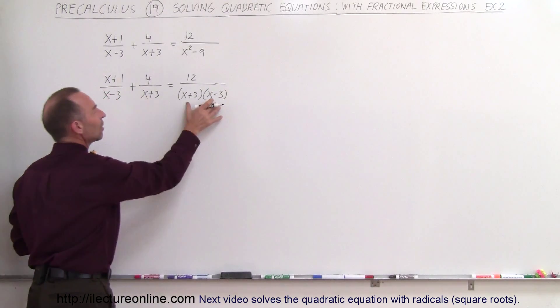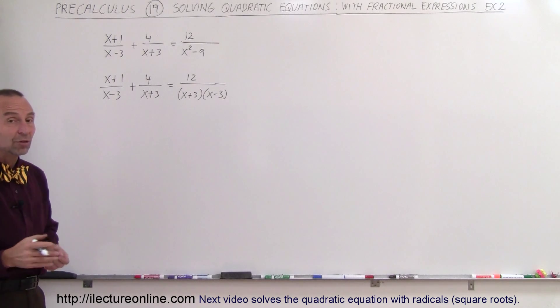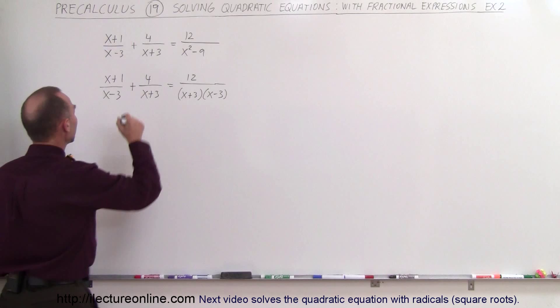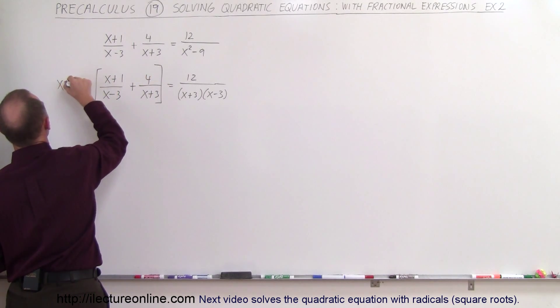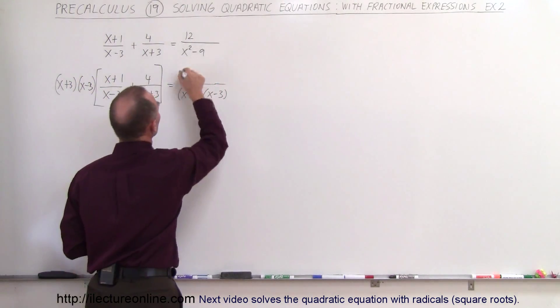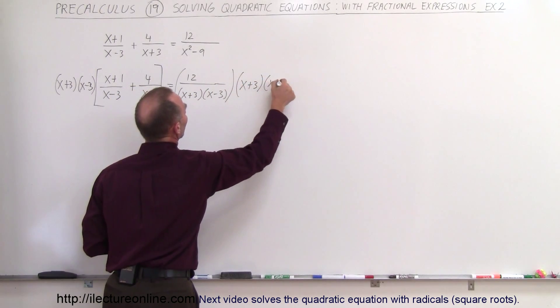And so you can see that this then becomes the lowest common denominator of the three fractions, which means we're going to multiply both sides of the equation by that lowest common denominator. So on the left side, this is multiplied times x plus 3 times x minus 3. And over here, this whole thing will be multiplied times x plus 3 times x minus 3.